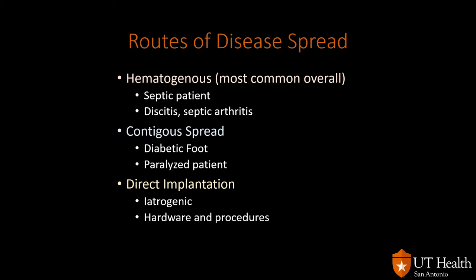A common example is discitis osteomyelitis in IVDA patients who have used infected needles. Contiguous spread is common in ulceration — we see this in diabetic foot with ulceration where pathogens from the skin extend all the way to the bone, and in paralyzed patients who develop decubitus ulcers leading to osteomyelitis of the sacrum or bones around the hip. Direct implantation is the least common, associated with hardware placement for fracture correction or bone procedures.